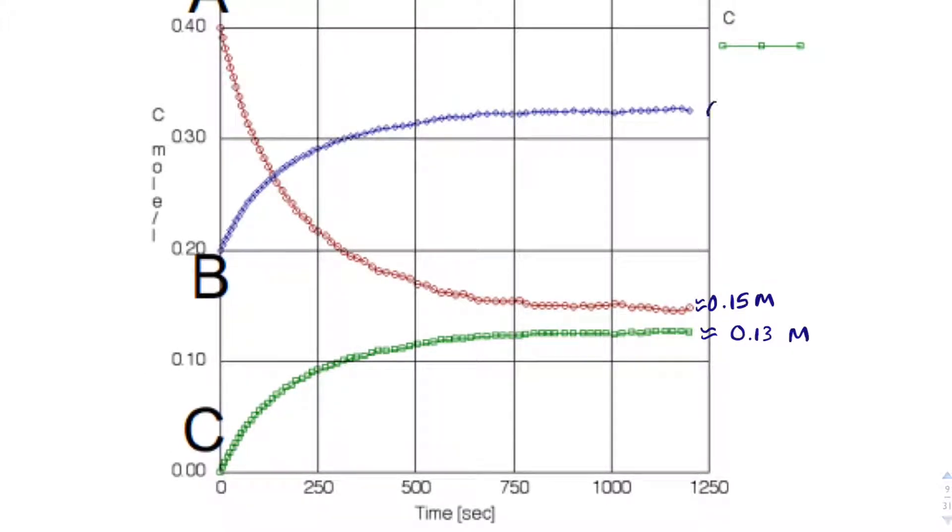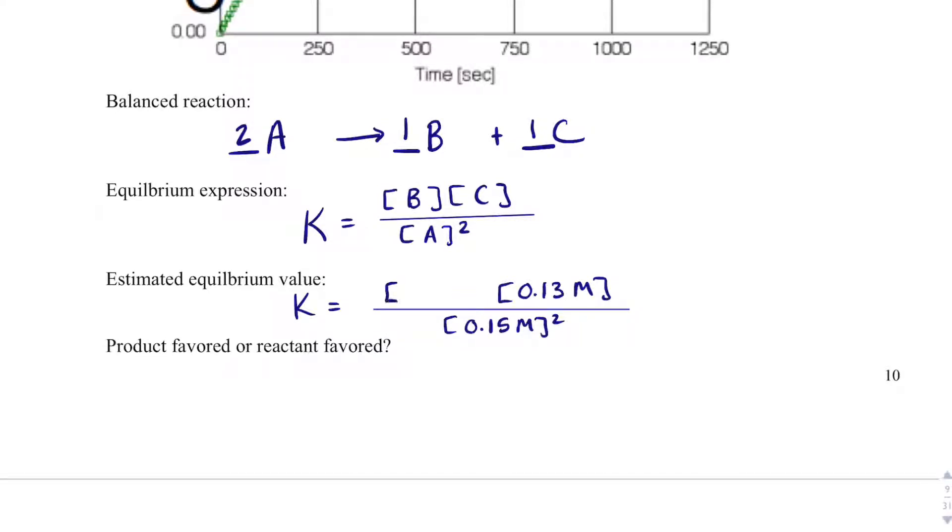And then B is about 0.33 molar. And then when I map that out, I get 1.91, and what that means is that this must be product favored, and the reasoning why is because K is greater than 1.